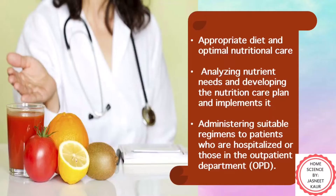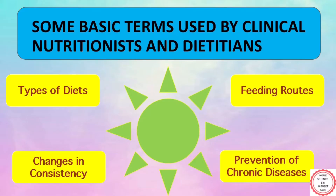In the last video, we covered that both normal and therapeutic diets are planned by dietitians to maintain or restore good nutrition in the individual, while keeping all essential factors in mind. Now there are certain terms which they use while planning meals for any individual. Let's quickly have a look at what these terms are — as you can see on your screens, these are: types of diets, change in consistency, feeding routes, and prevention of chronic diseases.